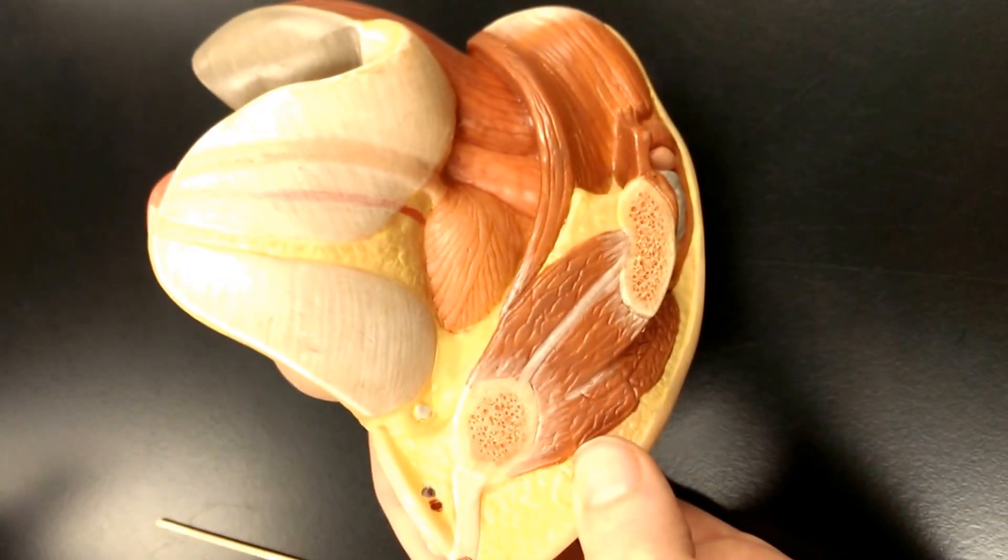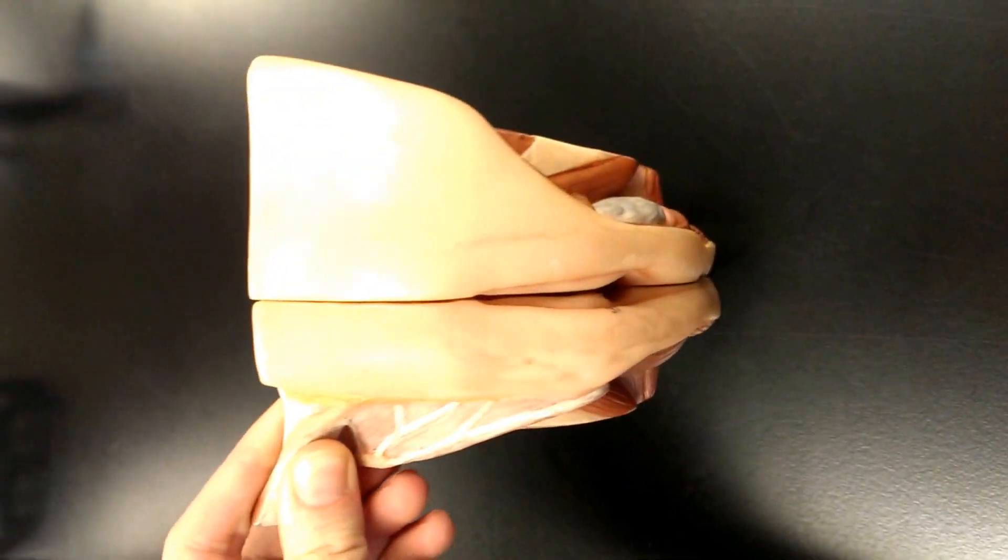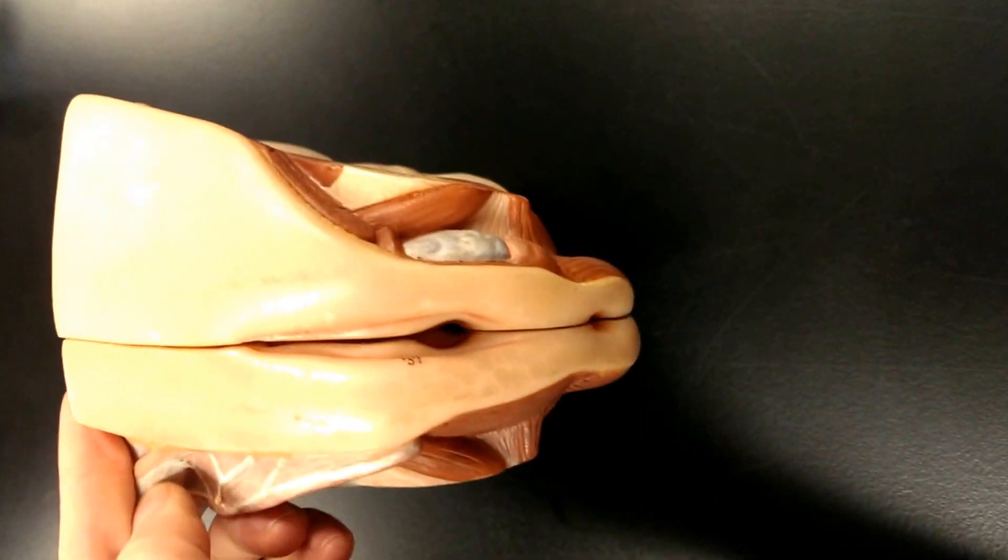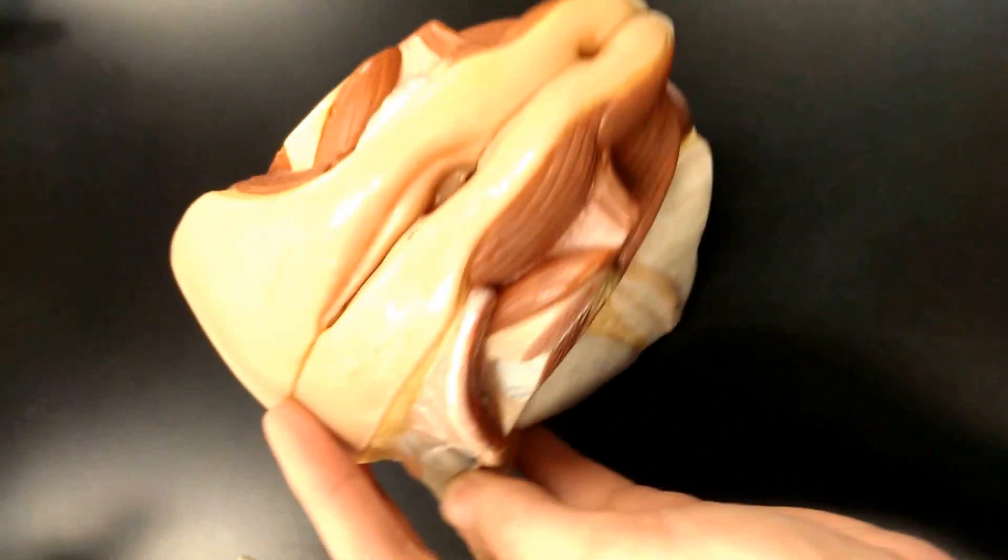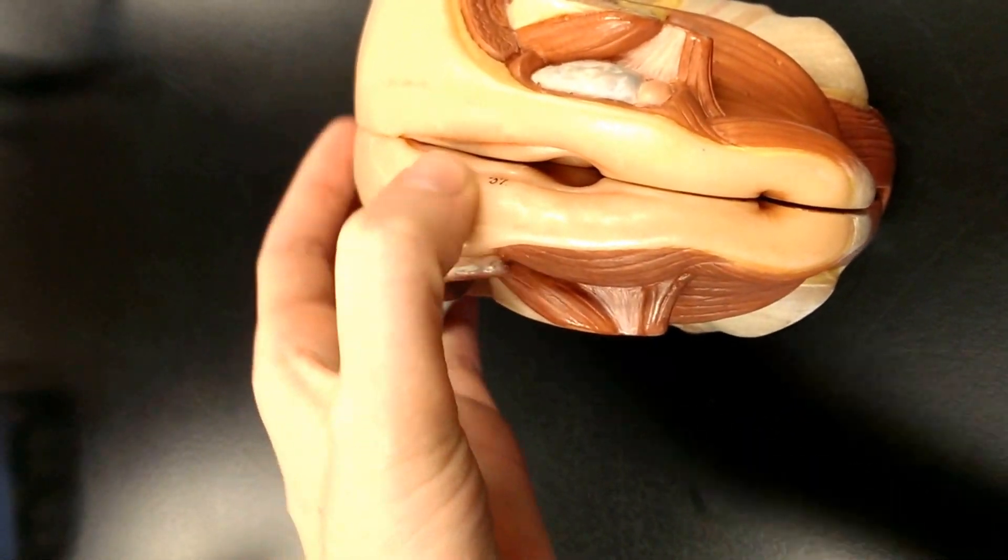We're looking at the female reproductive model from the torso, the insert for the female. Externally, we see the vulva, including labia majora, and just inside of that, labia minora.